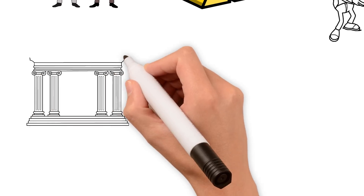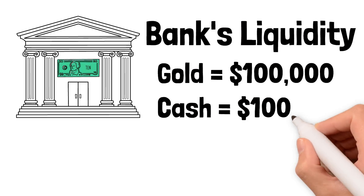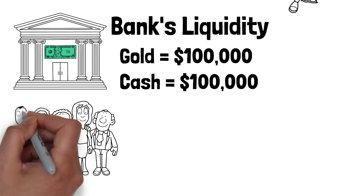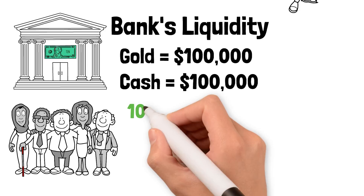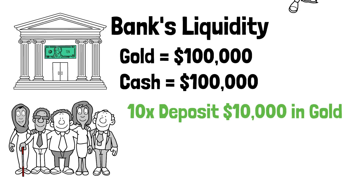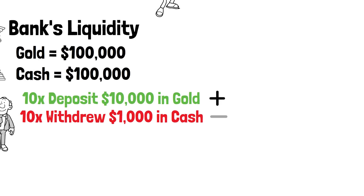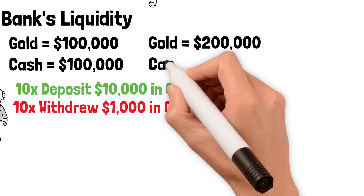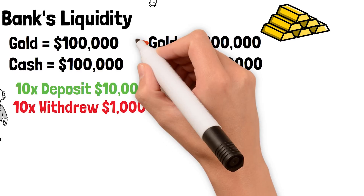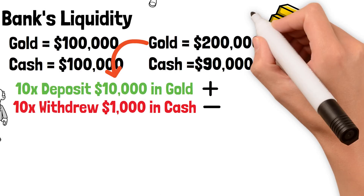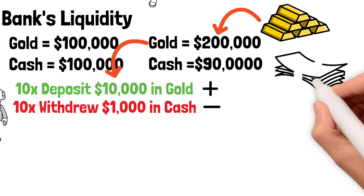The first day the bank opens, everyone rushes in to open savings accounts, deposit their gold, and withdraw some cash. Because the bank was brand new, it didn't have large liquidity — it opened with $100,000 in cash and $100,000 in gold bars. The first ten customers each deposited $10,000 in gold bars and withdrew $1,000 in cash, adding $100,000 to the gold supply and taking $10,000 from the cash supply.